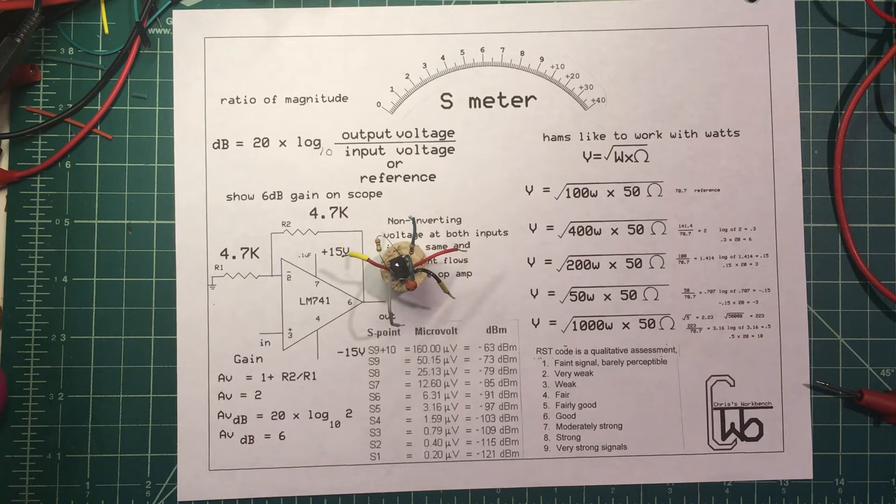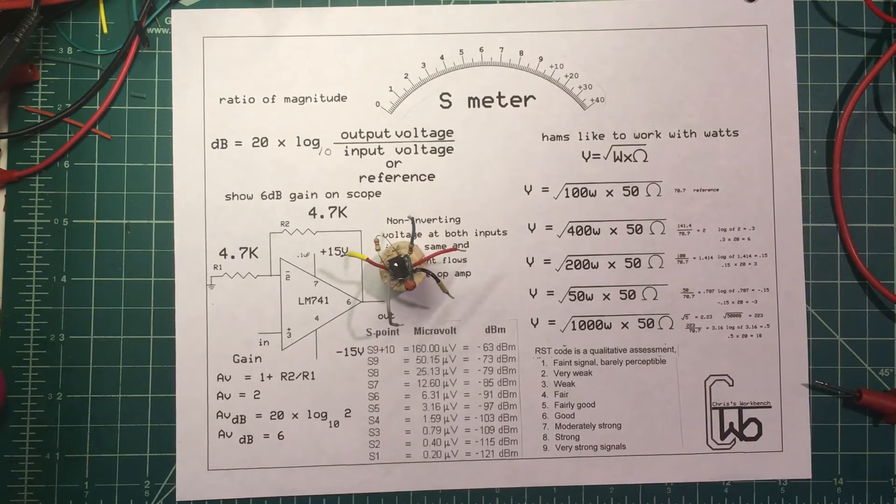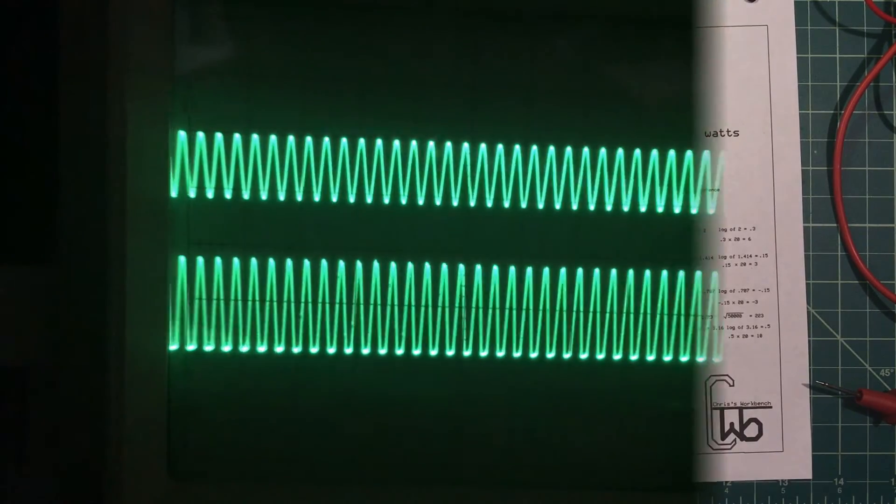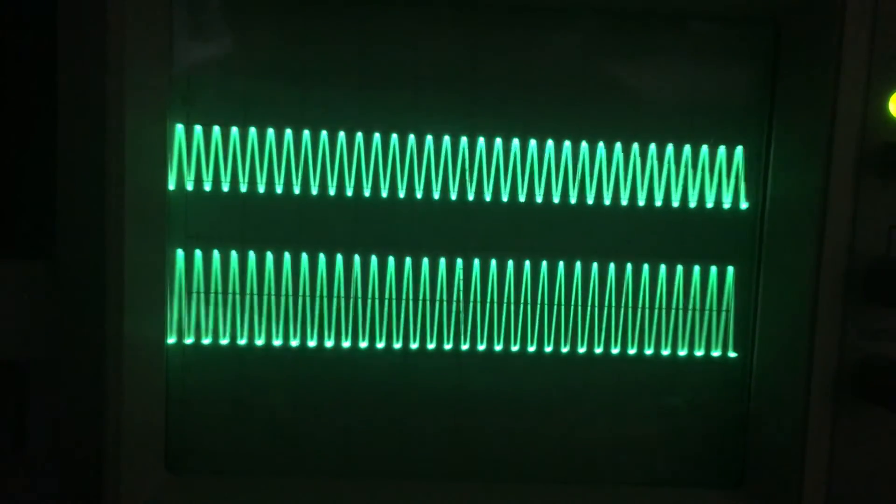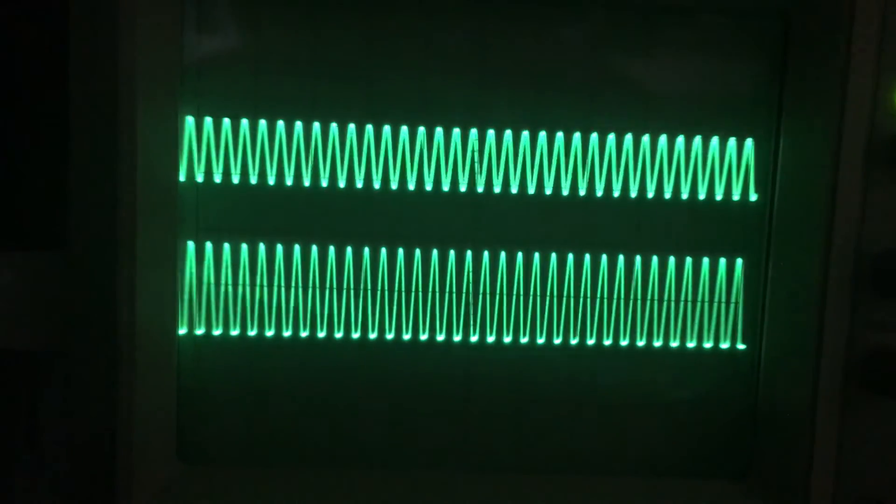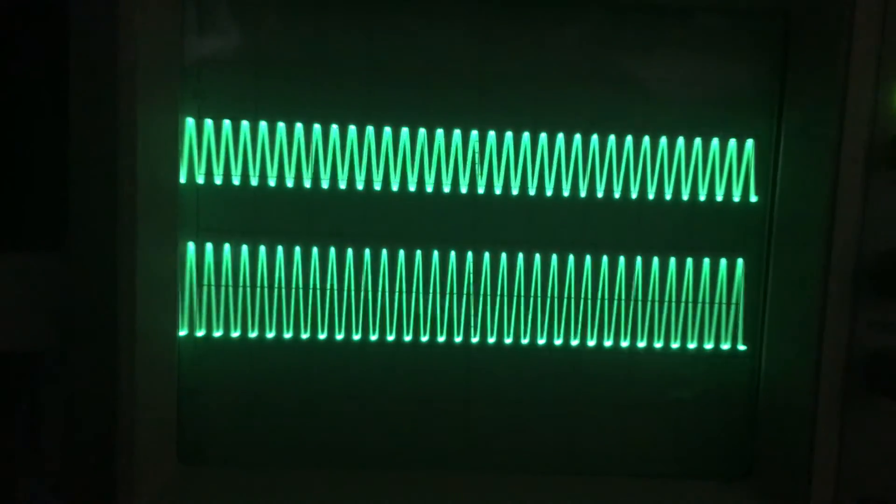Now let's look at the scope. The top trace is one volt peak to peak, 10 kilohertz. The bottom trace is two volts peak to peak, 10 kilohertz. I've got a gain of two and I'm up 6 dB.